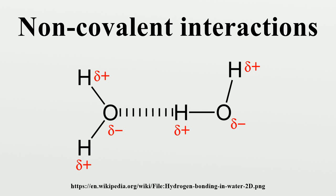Polar-pi interactions involve molecules with permanent dipoles interacting with the quadrupole moment of a pi system. While not as strong as a cation-pi interaction, these interactions can be quite strong, and are commonly involved in protein folding and crystallinity of solids containing both hydrogen bonding and pi systems. In fact, any molecule with a hydrogen bond donor will have favorable electrostatic interactions with the electron-rich pi system of a conjugated molecule.